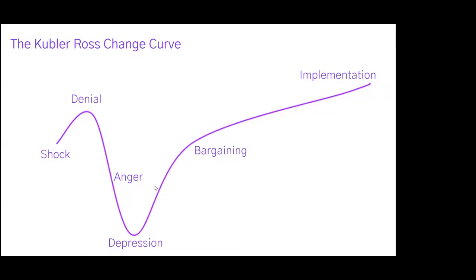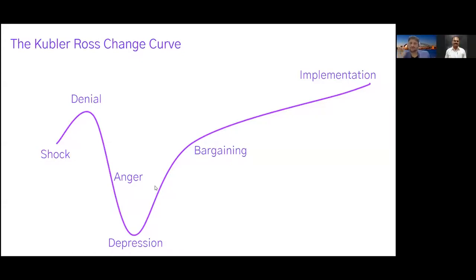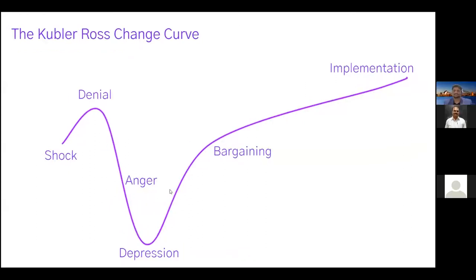They are bargaining — they can see the light at the end of the tunnel. This is where you talk about what is in it for them. When running a change program for a company, yes it's important to tell them what it means for the company and the customer, but people are selfish — everyone wants to know what's in it for me. Bring up all the personal benefits; for example, if they're learning SAP after using Tally, that's a market-valued skill.